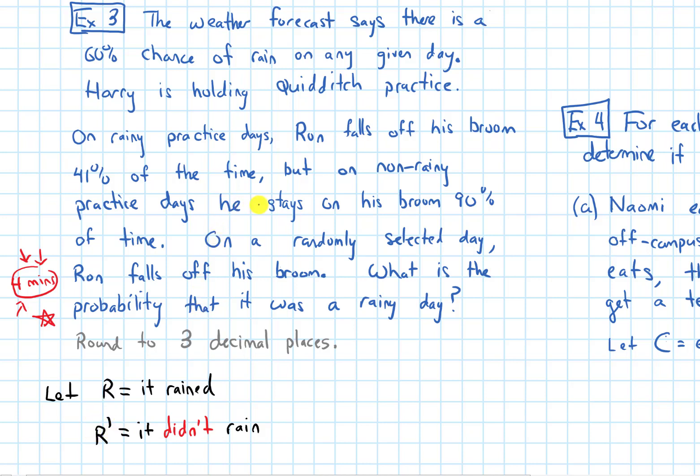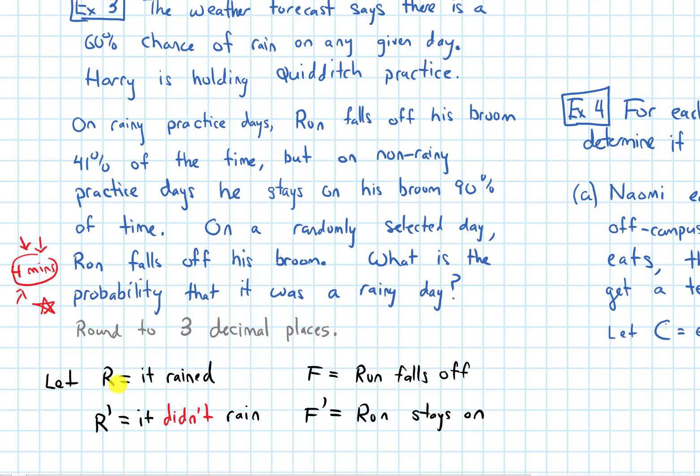There's also this matter of, does Ron fall off his broom or not? Let me let F be the event that Ron falls off. I probably don't want to pick R because I already have an R. I can let F complement be the opposite of that. So Ron does not fall off, and if he doesn't fall off, that means he stays on his broom.